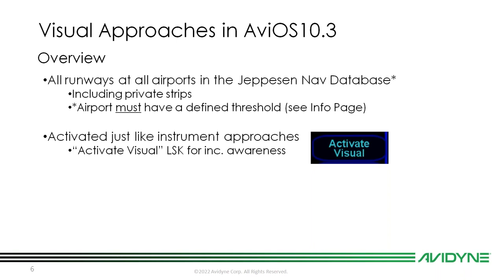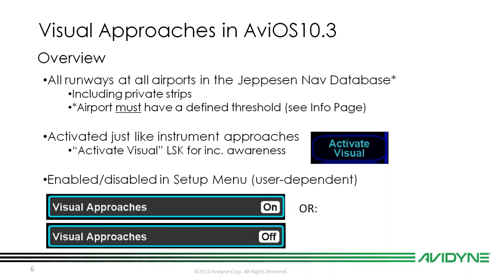Visual approaches are activated just like an instrument approach. Instead of 'Activate Approach,' the FMS hook will say 'Activate Visual' — that label was created for increased awareness so you know it's a visual approach you're activating. This feature is enabled and disabled in the setup menu and is user-dependent. With AVIOS 10.3 supporting up to 10 user profiles, each profile has its own visual approach setting that can be turned on or off.